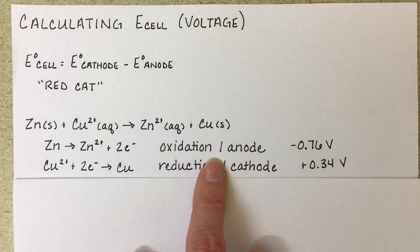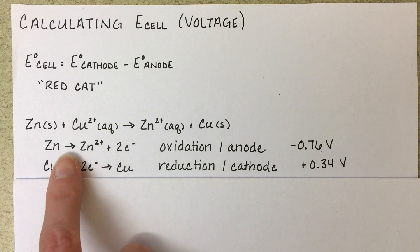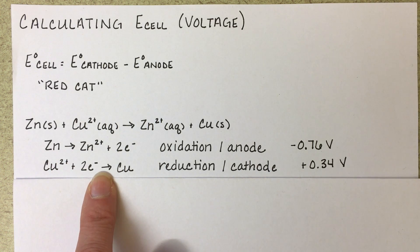Once we've got these identified, we're going to go to our textbook and look up the table of standard reduction potentials and find our half reactions in that table.